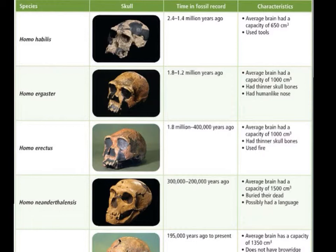An interesting thing about Homo ergaster is they're the first group to migrate out of Africa and into Asia, and possibly Europe — though there's some debate about the fossil evidence found there. Most of these species start in Africa and then move out into other areas, so Homo ergaster is the first member of the Homo genus to leave Africa. They also had thinner skulls, which is a theme we notice as we get closer to modern people — the skull thickness decreases. They also had a more human-like nose with nostrils pointing downward, whereas some Australopithecus groups had nostrils that flared out more like other higher-level primates.